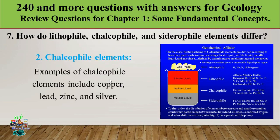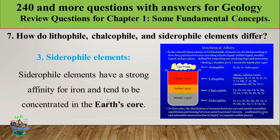Examples of chalcophile elements include copper, zinc, silver, and others. These elements combine to form sulfide minerals. Siderophile elements have a strong affinity for iron and tend to be concentrated in the Earth's core.